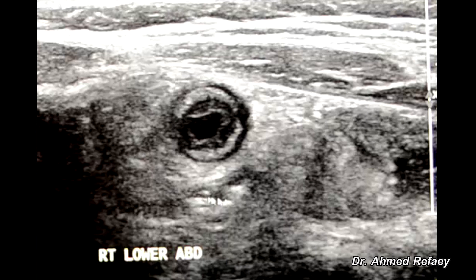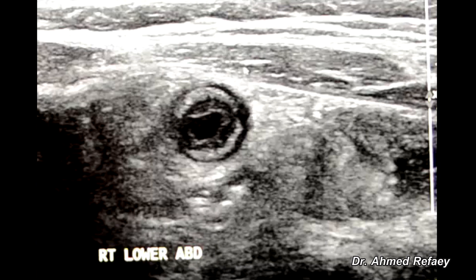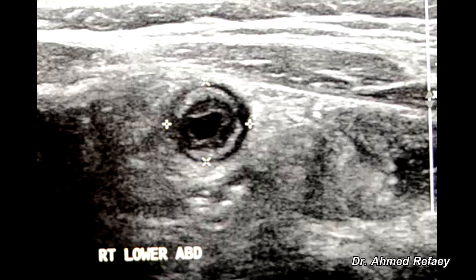This is the ultrasound examination of our patient today using the graded compression technique. This is a cross-section image of the inflamed appendix. This is the anterior abdominal muscle, and due to the graded compression technique, the appendix is located directly under the anterior abdominal wall muscle without intervening gas-containing bowel loops. The appendix is markedly dilated — measuring 0.9 cm in anterior-posterior diameter — confirming significant appendicitis, as the threshold is more than 8 mm.